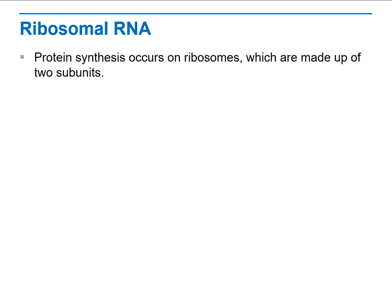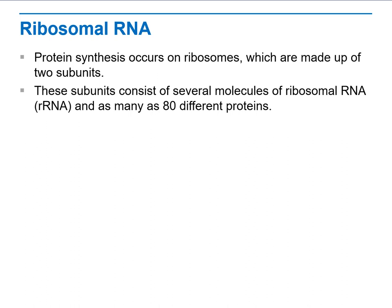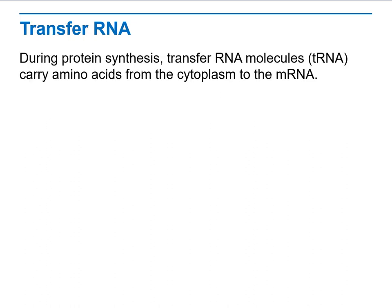Then, ribosomal RNA is related to the ribosomes, which are made up of two subunits. These subunits consist of several molecules of ribosomal RNA and contain about 80 different proteins.